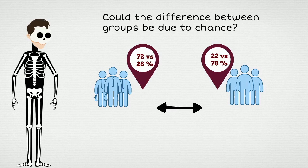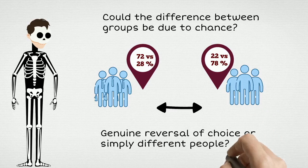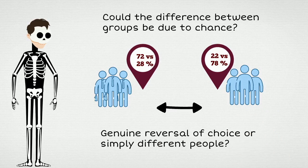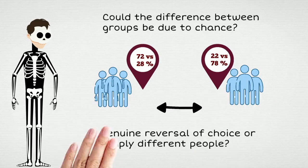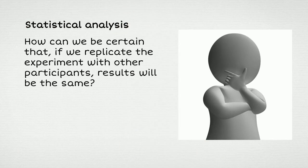72% is not 100%, so it's not like all participants are always influenced by the way the problem is phrased. So could it be that the observed result is simply due to the fact that the two groups of participants were different people to start with, and although they were randomly allocated into groups, it so happens that people in one of the groups were more risk-taking than the other group? How can we be certain that if we replicate the experiment with another sample of participants, the result will be the same?